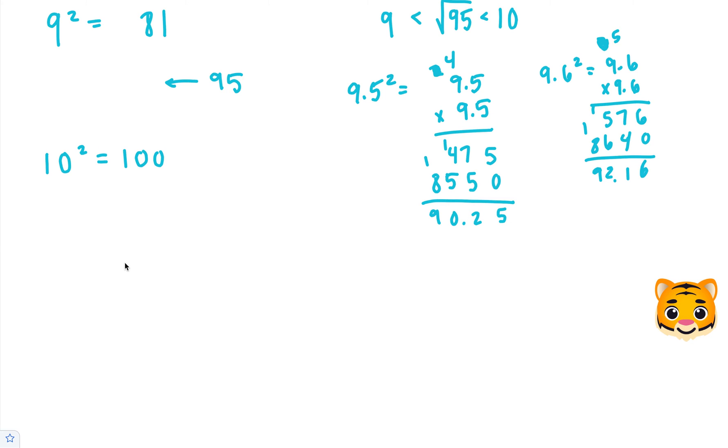So let's try 9.7. 9.7 squared is 9.7 times 9.7. 7 times 7 is 49, carry the 4. 9 times 7 is 63, plus 4 is 67. Add our 0. 9 times 7 is 63, carry our 6. And then 9 times 9 is 81, plus 6 is 87. When we add these together, we end up getting 94.09, which is very close to 95.